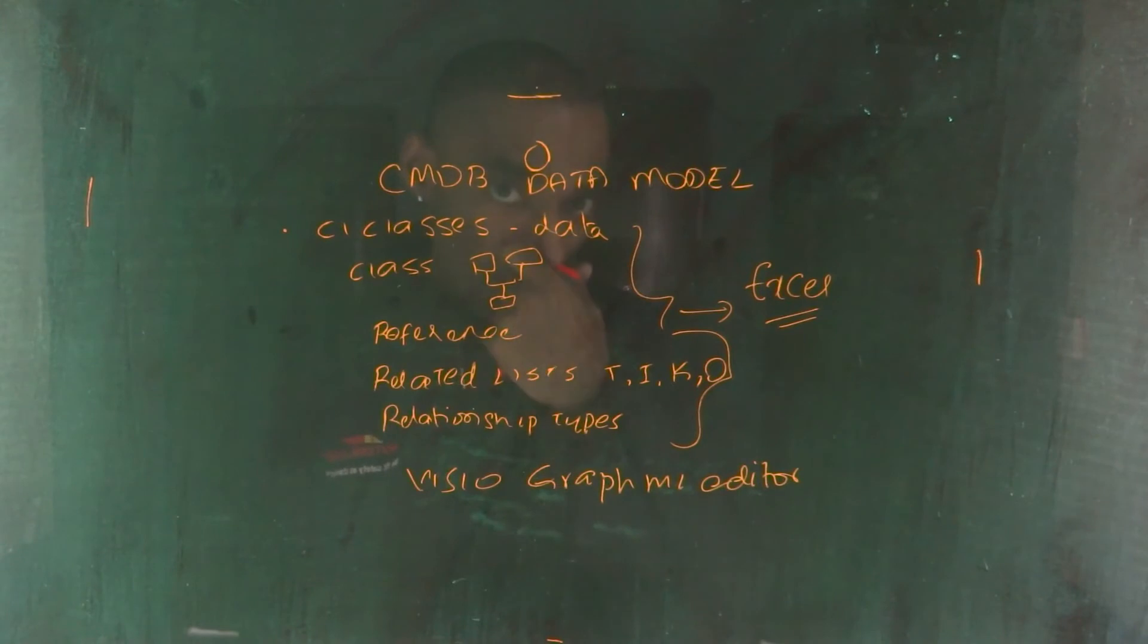Once this is done we need to identify the mechanism in terms of how we model the data. For example we can come up with a convention to define the classes like for database we can use this convention, for router it can be this convention and for a server it can be this convention and so on. So you can use a convention to represent each class.